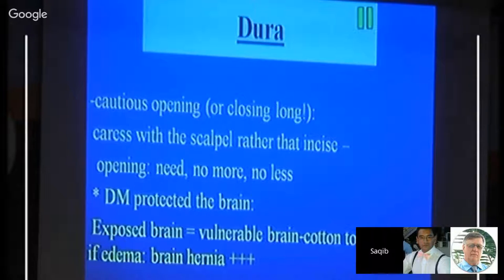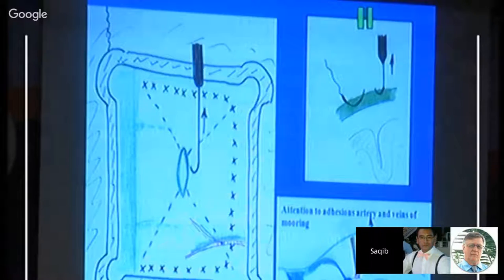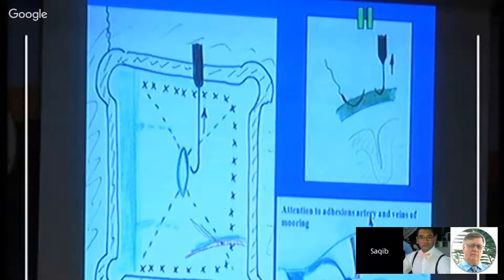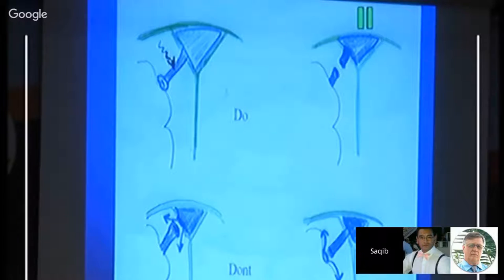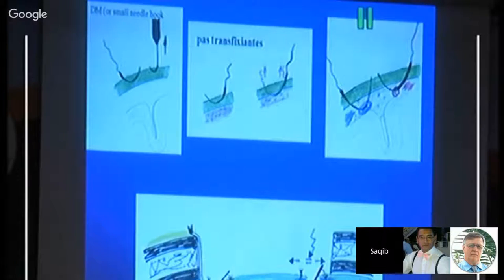Open the dura continuously along defined lines, using the scalpel carefully — not cutting but caressing it. Open only the amount of dura required, no more and no less, as the dura protects the brain from damage. During transfixation, use intradural sutures and don't go too deep as you might catch an artery or vein. When dealing with bridging veins, cut them from the center — not toward the sinus, where they will retract into the sinus, and not toward the brain, where they will retract into brain tissue.